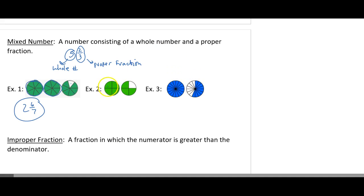Example 2. I have 1 whole here. Then the partial I have is 3 out of 4 in the next part.